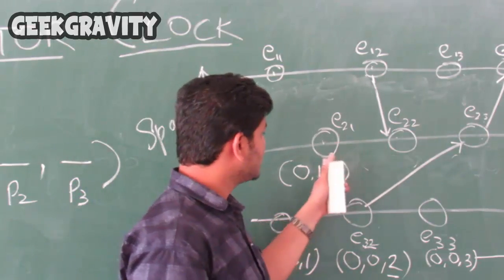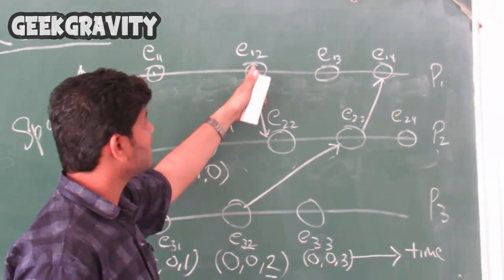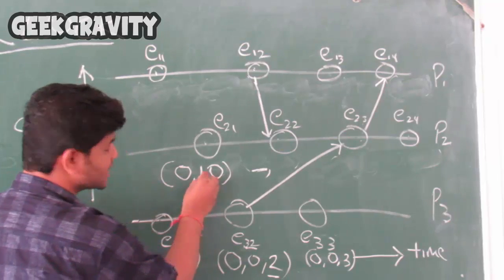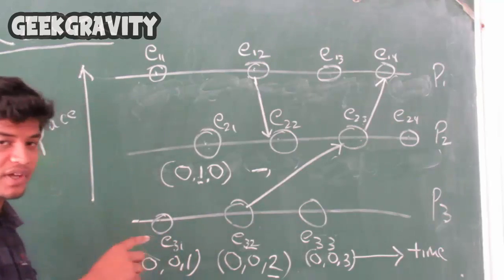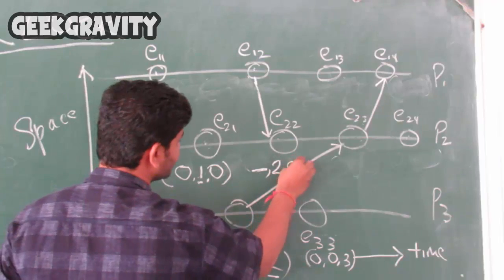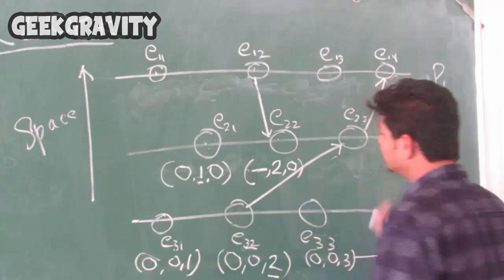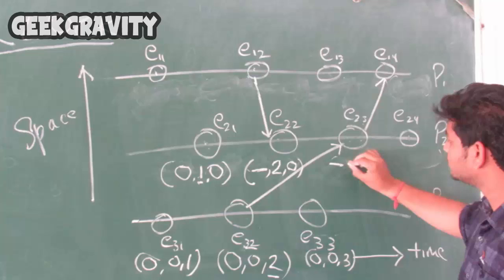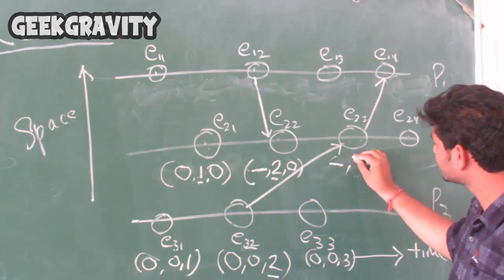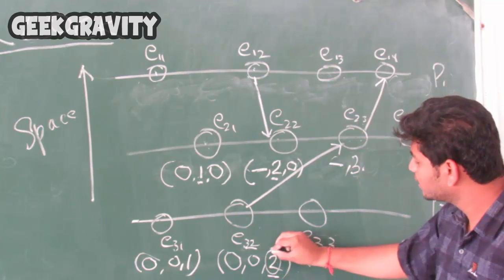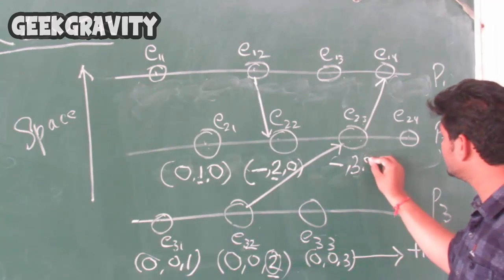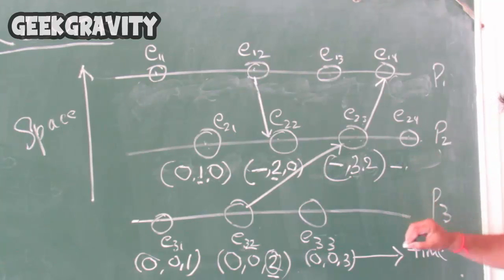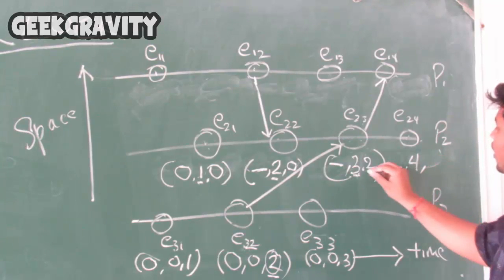For E22, there is a successive moment from E21 as well as a message passing from E32. The first bit comes from P1 which we leave blank for now. We increment the P2 component from 1 to 2, so it becomes 2, and the P3 component stays 0. For E23, there is a successive movement from E22 and a message passing from E32. We leave the first bit blank and increment 2 by 1 to get 3, and copy the P3 value of 2. For E24, there is a successive moment, so we leave the first bit blank, increment P2 to 4, and copy P3 as 2.